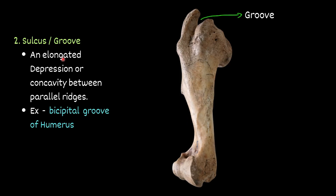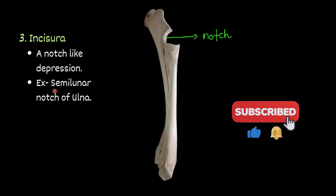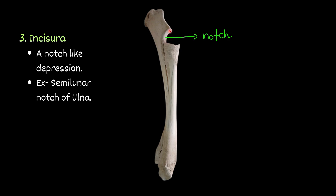Sulcus or groove — an elongated depression or concavity between two parallel ridges. For example, the bicipital groove of the humerus. You can see this one — this is the groove, the bicipital groove, sulcus or groove. Then incisura — a notch-like depression. For example, the semilunar notch of the ulna. This one is the notch, or we can say incisura.